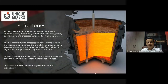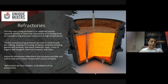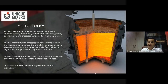Let's understand the importance of refractories as a product. Virtually everything provided in advanced society depends directly or indirectly on manufacturing processes conducted at high temperatures. These hot manufacturing processes include shaping or treatment of metals, ceramics including glass and cements, electronic materials, fuels, and a host of organic and inorganic chemical products. Industrial refractories make these hot processes possible and economical when metal containment cannot compete. It would be appropriate to say that refractories are enablers or facilitators of our productivity.